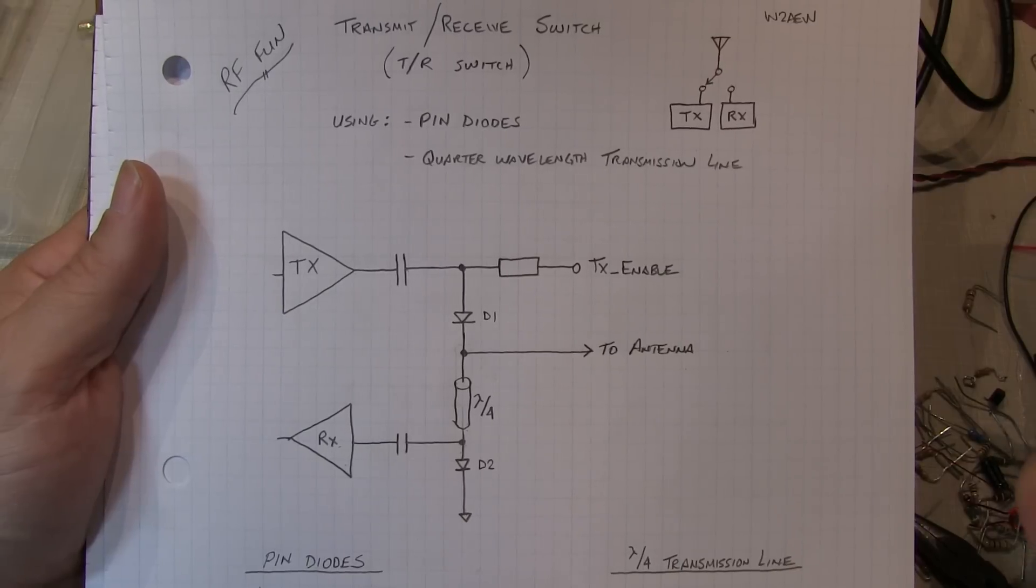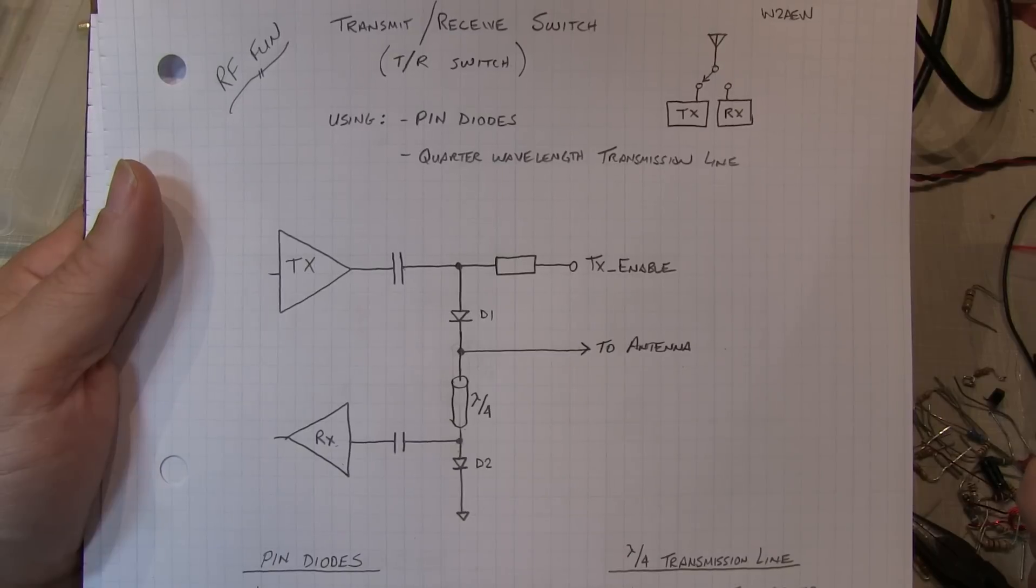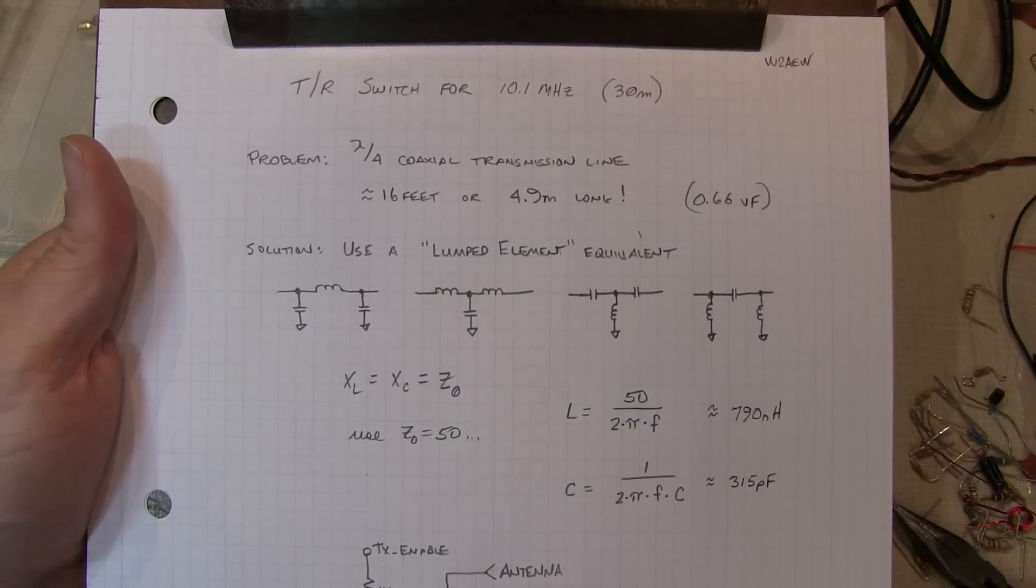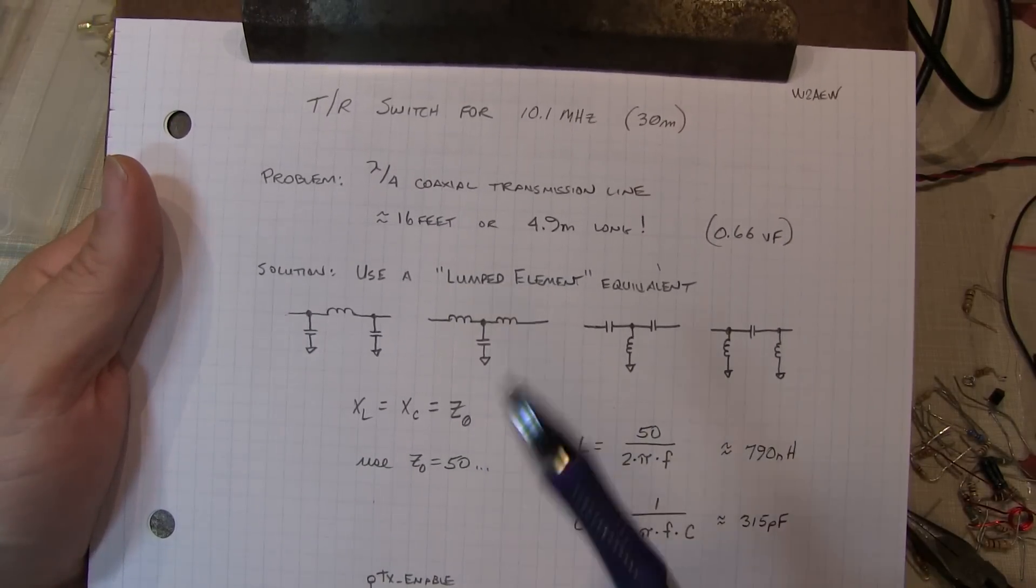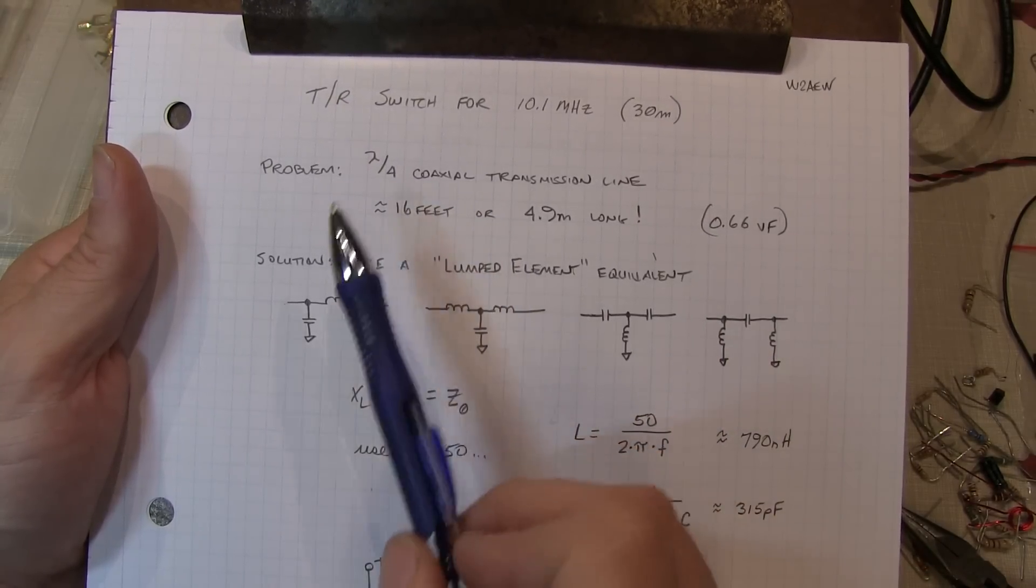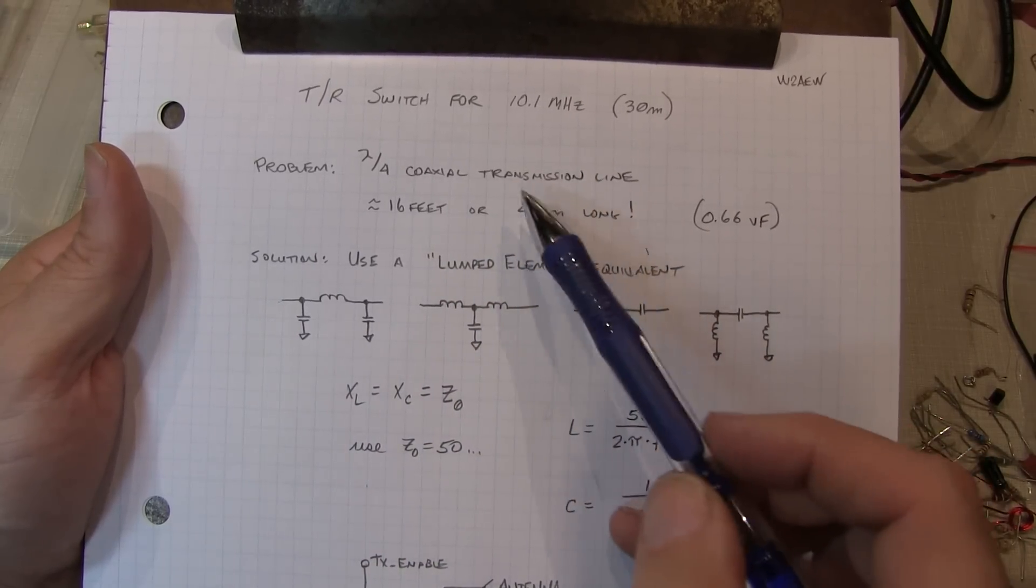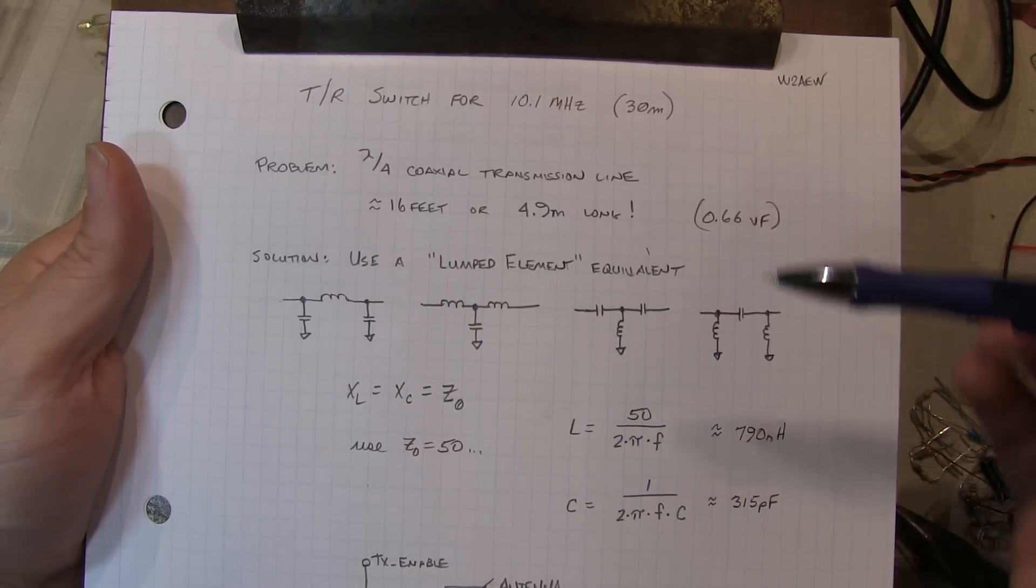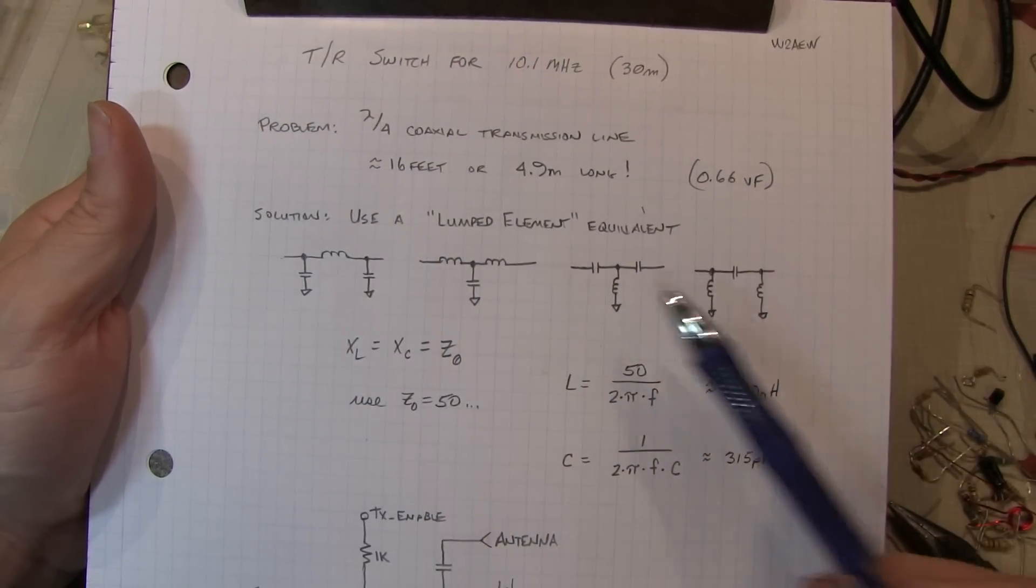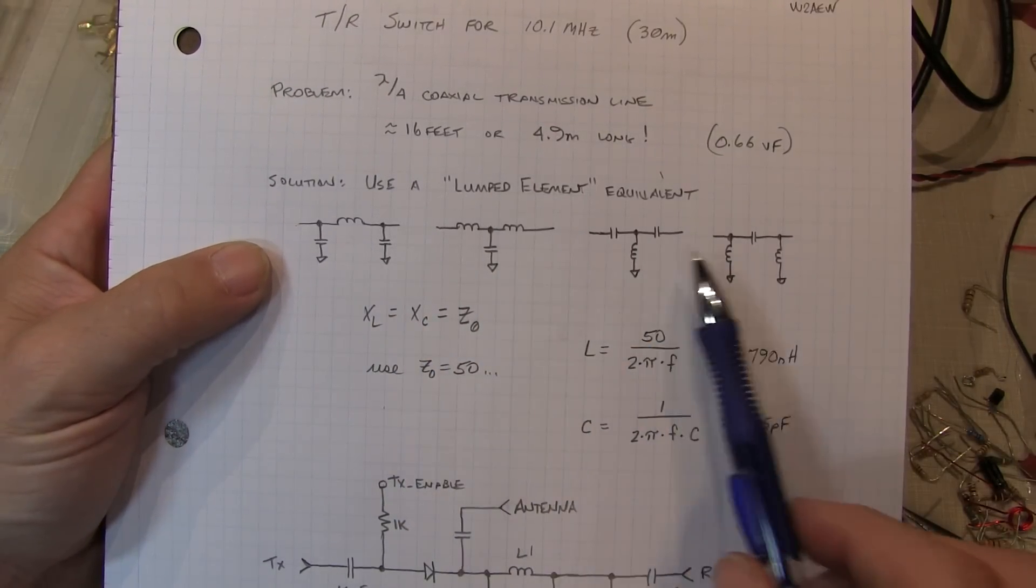Now I've got a friend that's building a low power 30 meter transceiver or 10 megahertz transceiver for ham radio and wanted to do some electronic transmit receive switching. So let's take a look at how to build a 30 meter transmit receive switch. So the first thing we think about when doing this is that we've got a little bit of a problem. A quarter wavelength long hunk of coax with a 0.66 velocity factor, a quarter wavelength long at 10 megahertz is about 16 feet long or about 4.9 meters. That's a lot of coax to coil up to stick on a circuit board to make this switch. So what we do is instead of using an actual piece of transmission line, we use a lumped element equivalent. Using some simple LC circuits, you can essentially create the equivalent of a quarter wavelength long line.